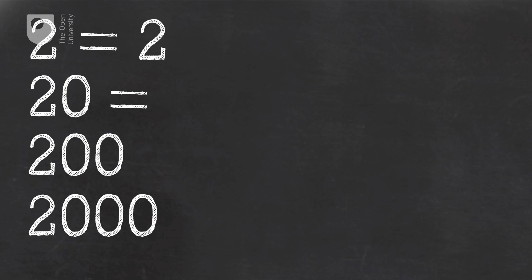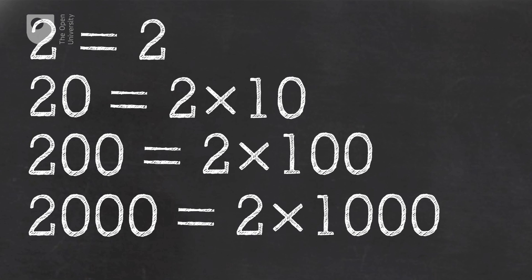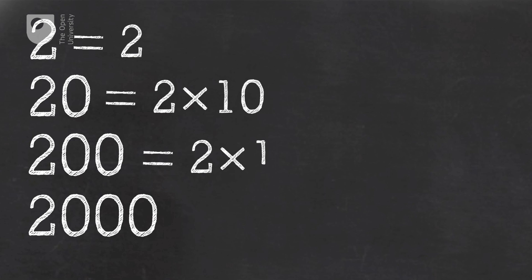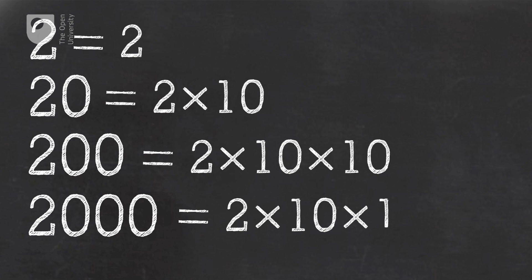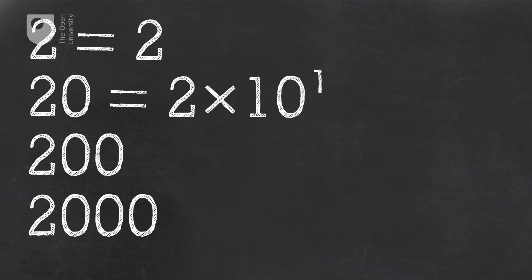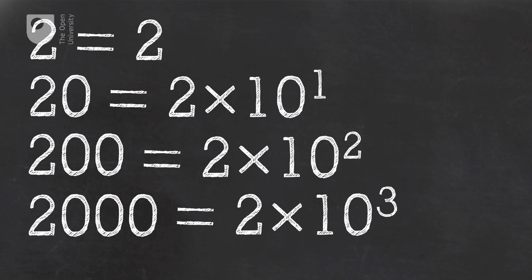The numbering system we use works in tens — that's the basis of our counting system. So 20, 200, and 2000 are increasingly large numbers, each ten times larger than the previous one. You could think of that set of numbers as: 2, two multiplied by 10, two multiplied by 100, and two multiplied by 1000. The same numbers could also be written as: 2, two times ten, two times ten times ten, and two times ten times ten times ten.